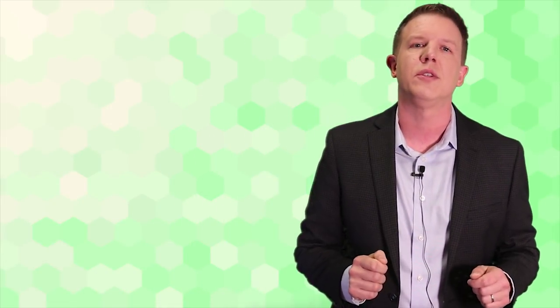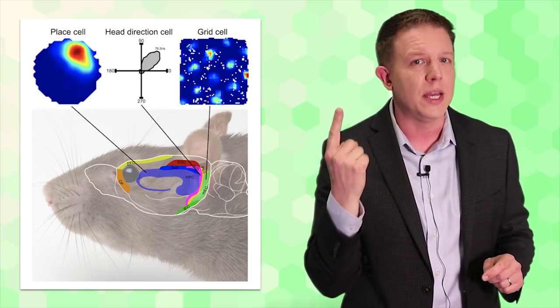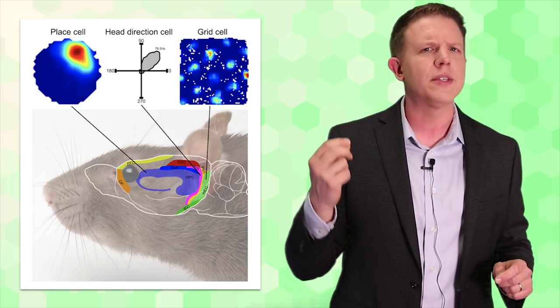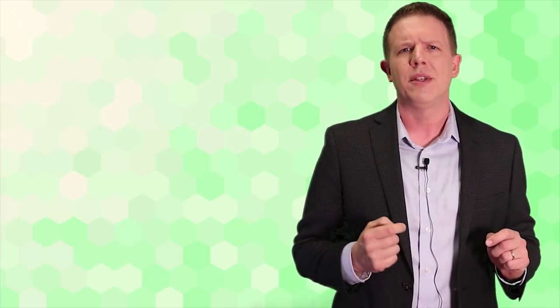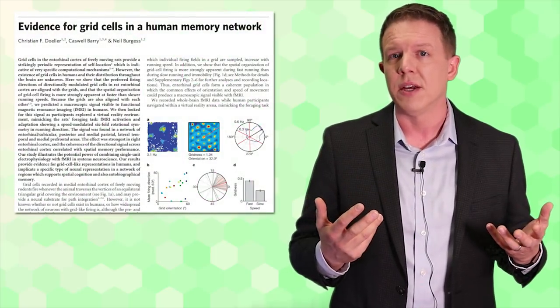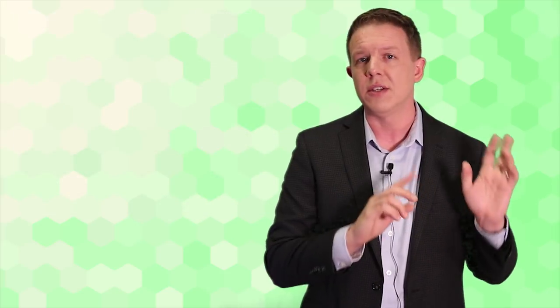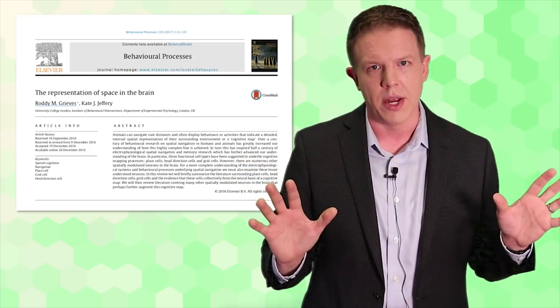Scientists have discovered several types of cells in the brain related to location, which include place cells in the hippocampus and head direction cells in the dorsal presubiculum. Grid cells have been found in the entorhinal cortex in rats, but there is also ample evidence of them in the neocortex of humans. For a great summary of these and other types of location cells in the brain, read the paper, the representation of space in the brain.